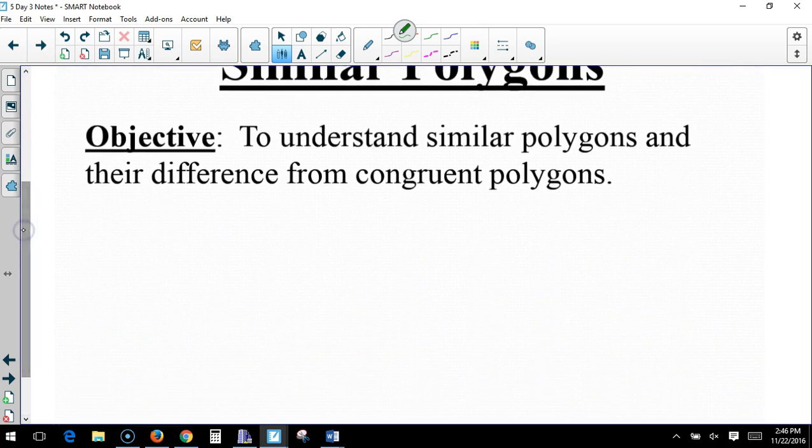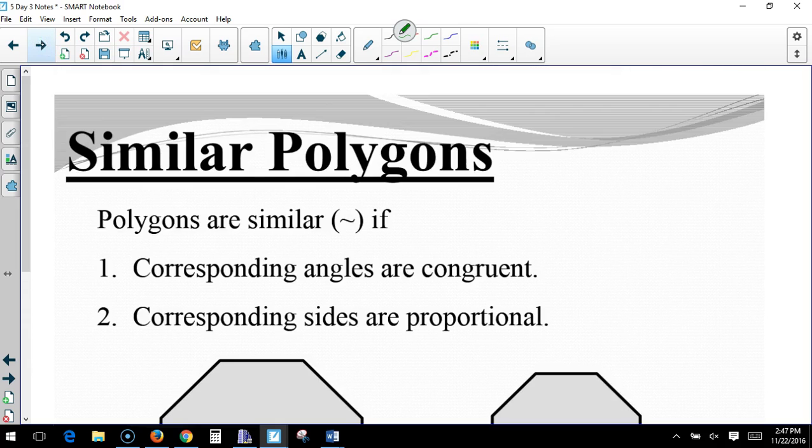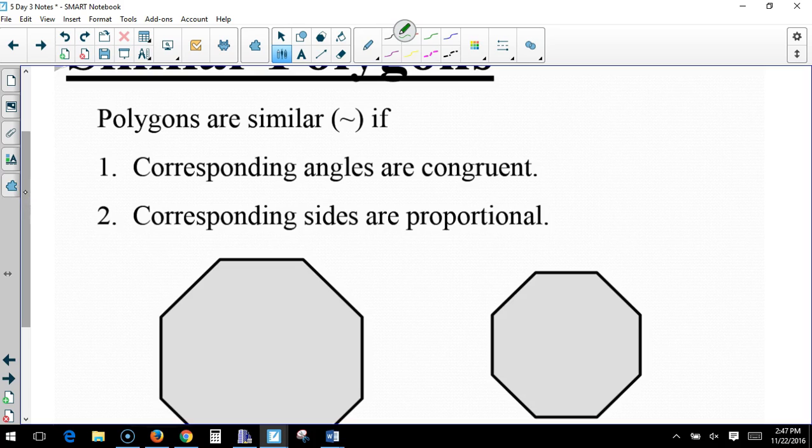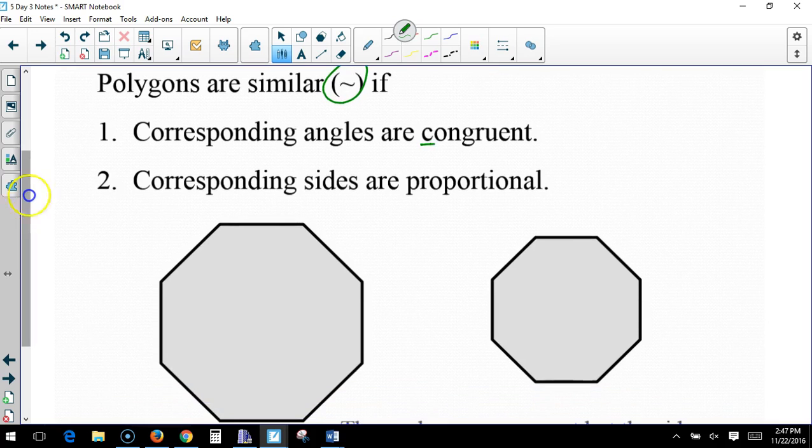Similar polygons. So, our goal is to understand similar polygons and their difference from congruent polygons. So, we kind of reference this, especially when we're talking about that AAA rule that did not exist. Because you can have a mean and a mini mean. And we talk about models and scale figures and miniature versions of things.